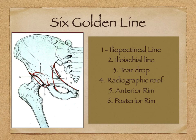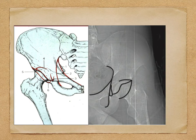Moving on to x-rays, the very basic is to identify the six golden lines. The first is the iliopectineal line, the second is the ilioischial line, the third is the teardrop, and you should also be able to identify the radiographic roof, the anterior and the posterior rim. On this x-ray, you can see the iliopectineal line, the ilioischial line, the teardrop, the anterior and posterior rim, and the roof.